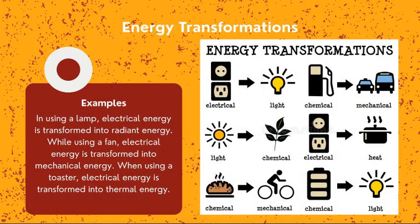Some examples of energy transformation: when using a lamp, electrical energy is transformed into radiant energy you see as light. When using a fan, electrical energy is transformed into mechanical energy — the moving of the fan blades. When a toaster turns on, electrical energy is transformed into thermal energy.